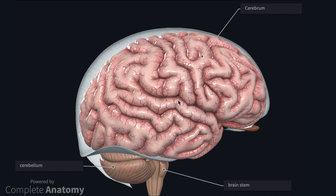Hey, I'm James, and today I'm going to discuss the anatomy of the cerebellum. I will describe where the cerebellum is in relation to the cerebrum and brainstem. I will then move on to the gross structure of the cerebellum and the associated vasculature. Finally, I will talk about the functions of the cerebellum and cerebellar dysfunction.